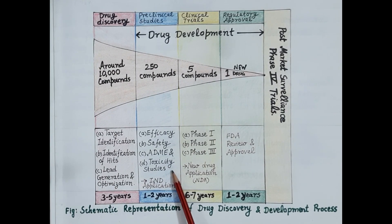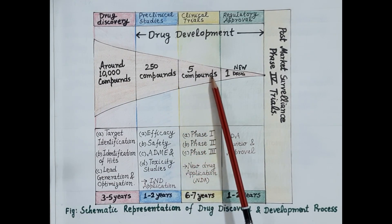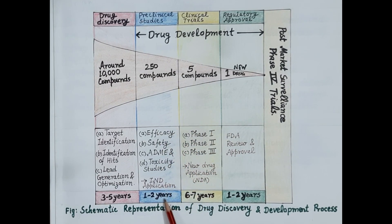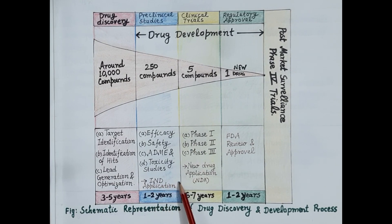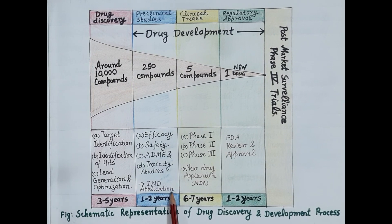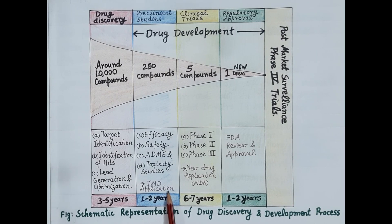By the end of pre-clinical studies, almost all drug candidates are rejected and around five compounds are left to be further screened. The entire process of pre-clinical studies takes around one to two years. Data obtained from these pre-clinical studies is compiled in the Investigational New Drug (IND) application and submitted to the FDA for review and approval.